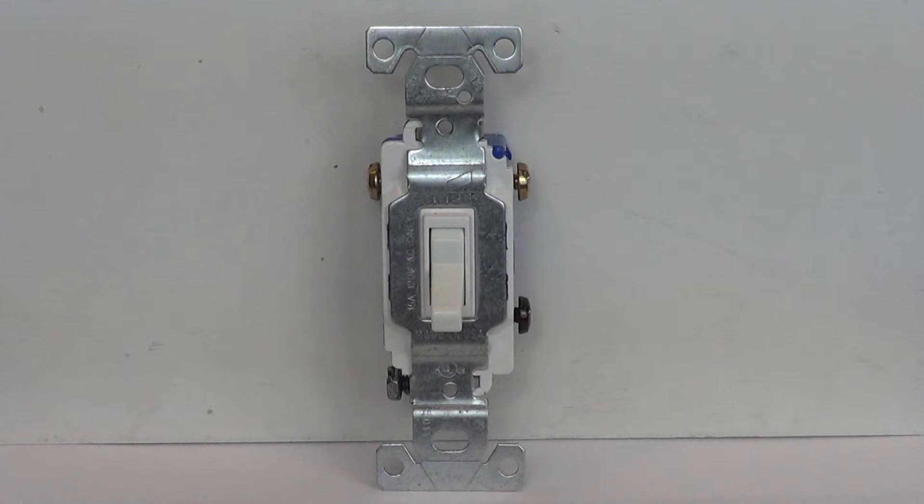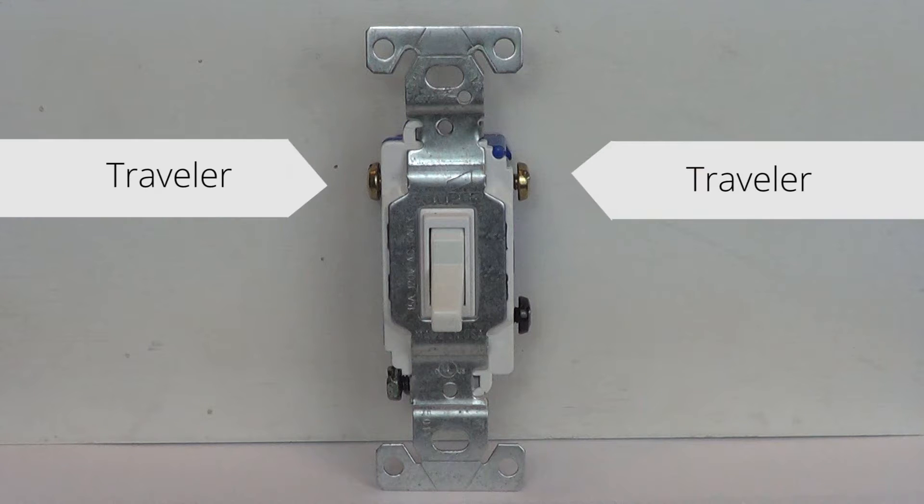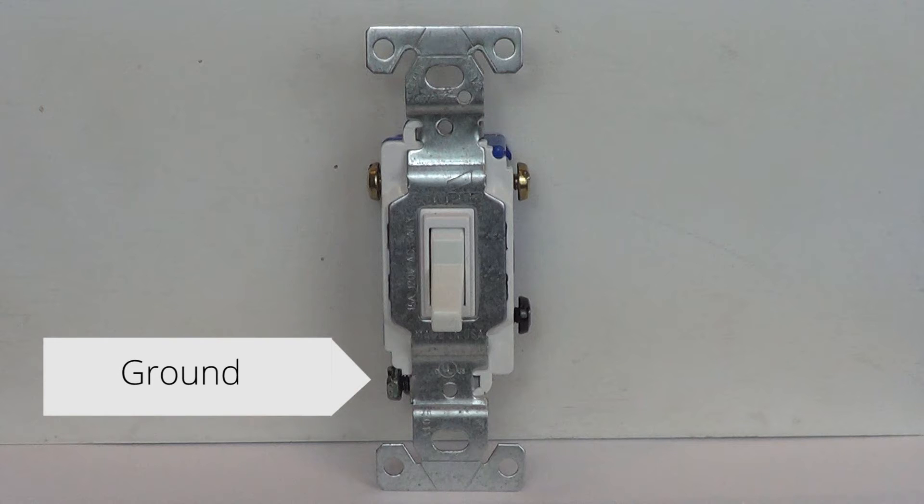On a three-way dimmer, there are four connections. The common wire gets connected to the screw that is its own darker color. There are two traveler connections that are the same color. The green screw is your ground screw.